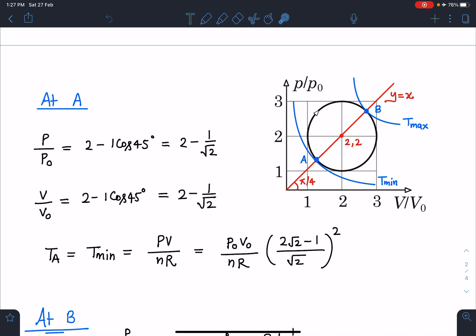I can easily find the coordinates of point A. You can see here it is 2-1·cos45°, and similarly this coordinate also is 2-1·cos45°. Both x and y coordinates are known to us. That means P/P₀ is known to us and V/V₀ is also known to us.